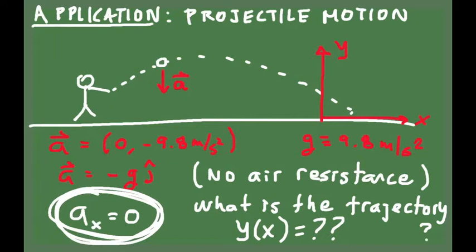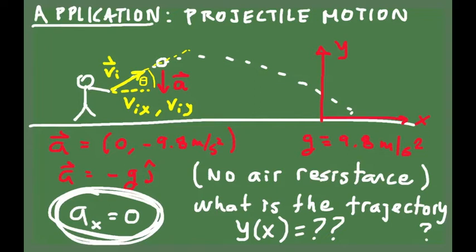Knowing that the acceleration of an object tossed in the air is like this, how do we figure out the trajectory — that is, y as a function of x? To do that, we need to specify some initial values: the initial location of the object and the initial velocity. That velocity can be specified by its initial magnitude and the angle it makes with the x-axis, or alternatively by specifying the x and y components of the initial velocity.